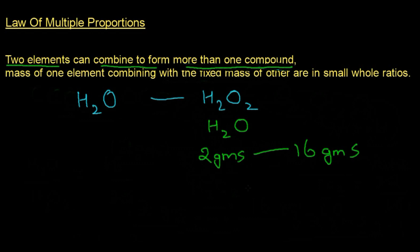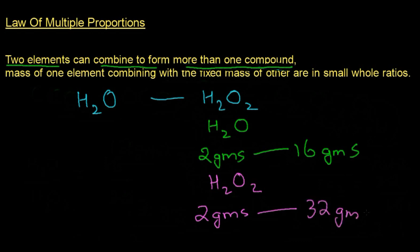The other compound is hydrogen peroxide H₂O₂. Hydrogen has atomic mass 1 and there are two atoms, so it is 1 × 2 = 2 grams. The atomic mass of oxygen is 16 and there are two atoms, so it is 16 × 2 = 32 grams. So to react with 2 grams of hydrogen we need 32 grams of oxygen. Again, two elements — hydrogen and oxygen — are combining in different ratios to form more than one compound, and hydrogen has a fixed mass of 2 grams in both compounds.